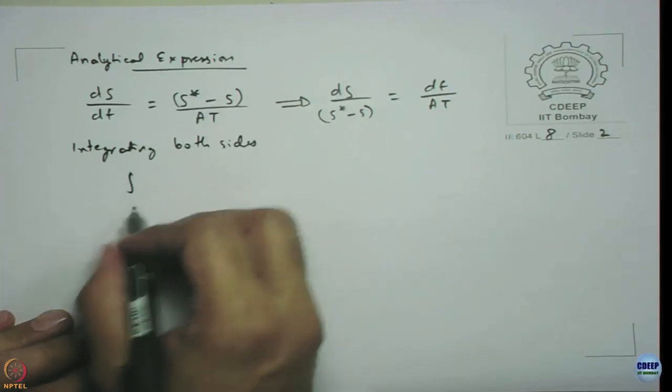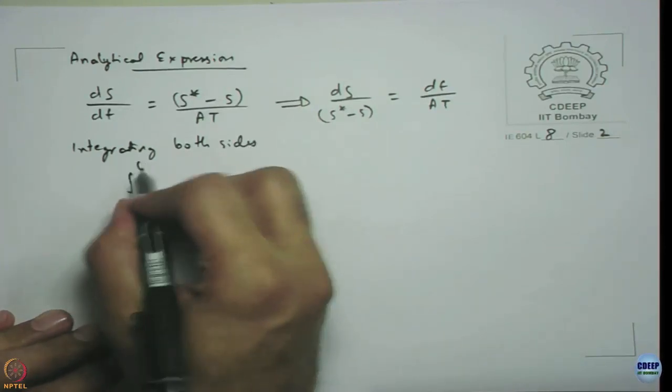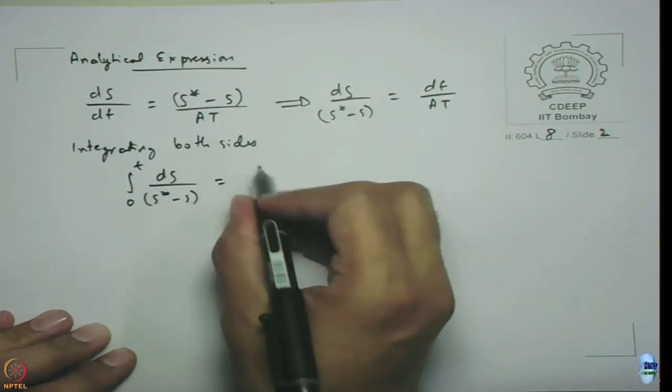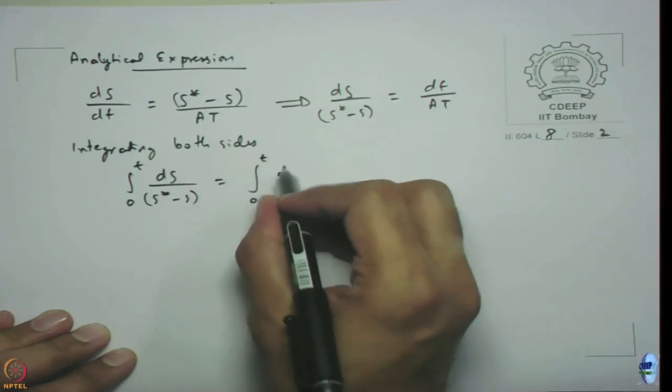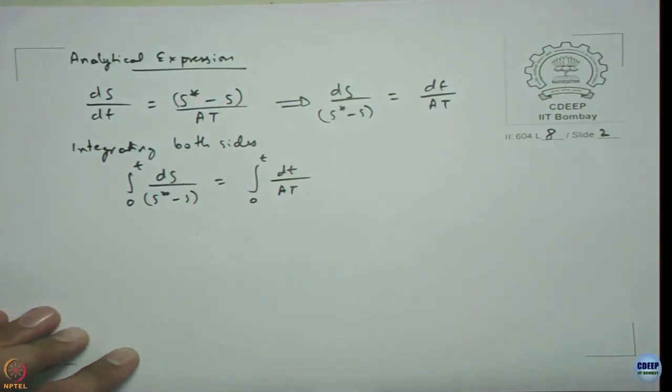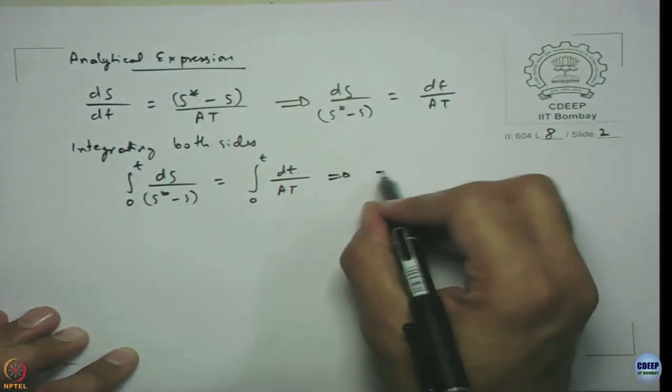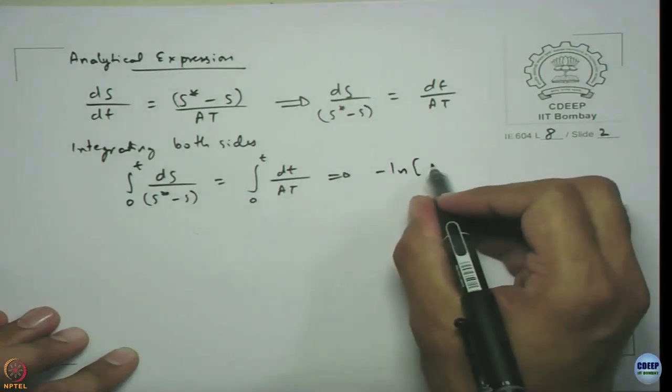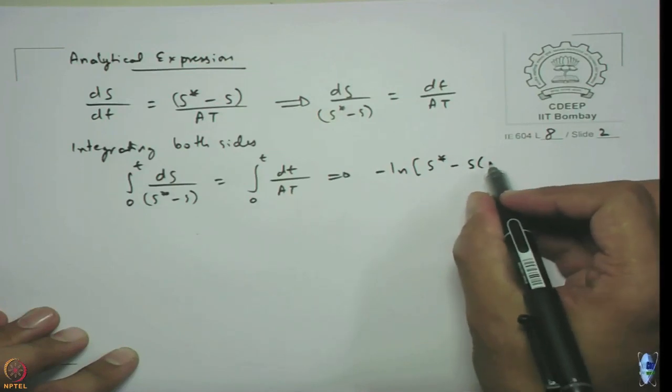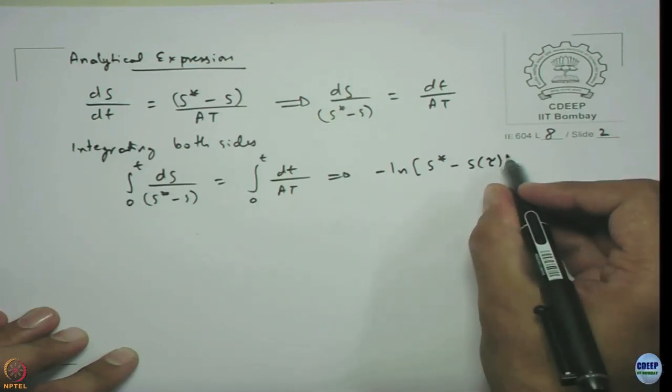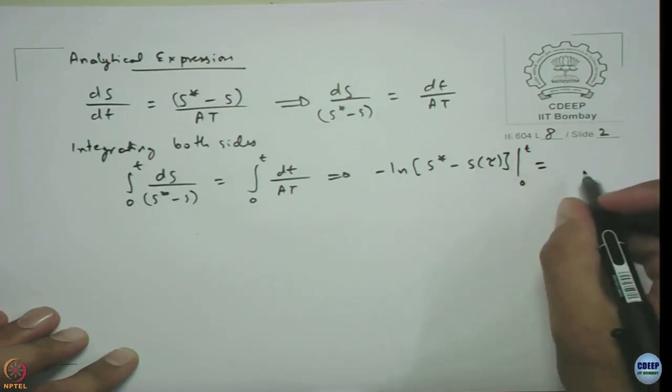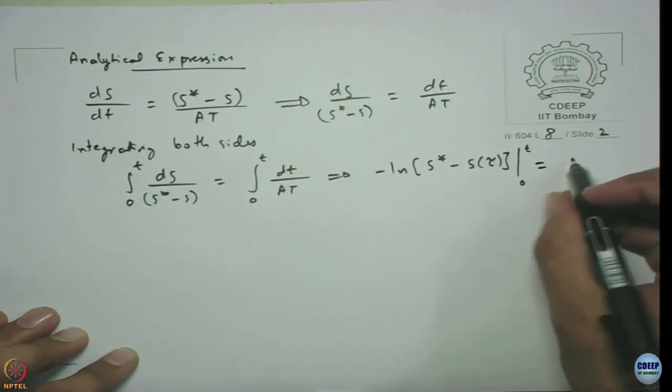Integrating both sides from 0 to t: integral of ds/(s* - s) from 0 to t equals integral of dt/AT from 0 to t, which gives -ln(s* - s) from 0 to t equals t/AT.